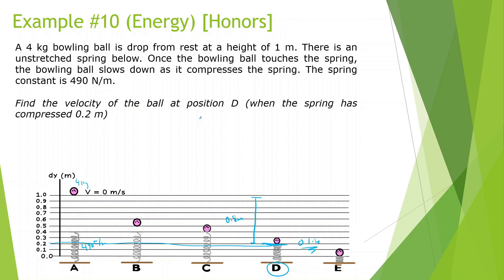Since energy is conserved: mechanical energy initial equals mechanical energy final. At the beginning, is there potential energy? Yes, it's above the zero line. Kinetic energy? No, it's at rest. Elastic potential energy? No, it's not compressed. At the end (position D), is there potential energy? No, it's on the zero line. Kinetic energy? Yes, it's still moving — that's what we're looking for. Elastic potential energy? Yes, it is compressed 0.2 meters.